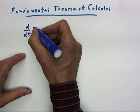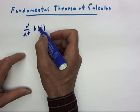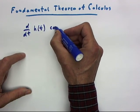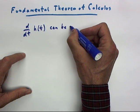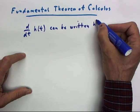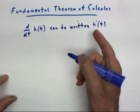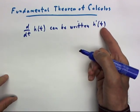First of all, if we have some function h of t, then the derivative with respect to t of h of t can be written h prime of t, where it's understood that the prime indicates the derivative with respect to the independent variable t.